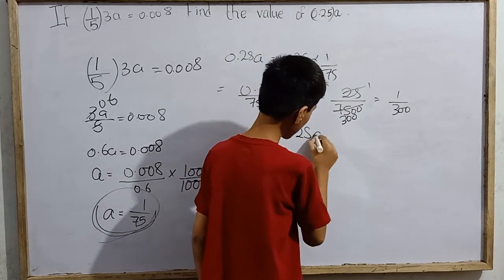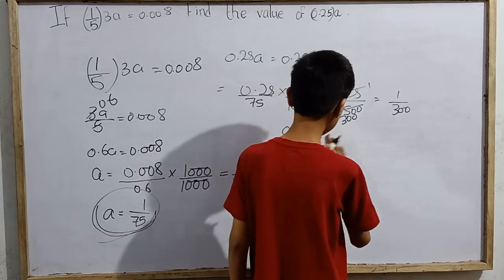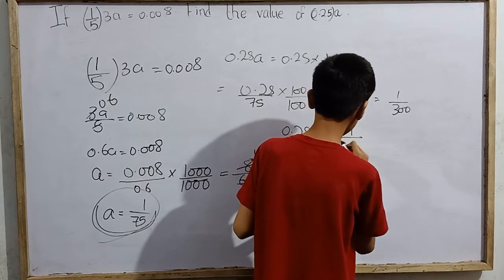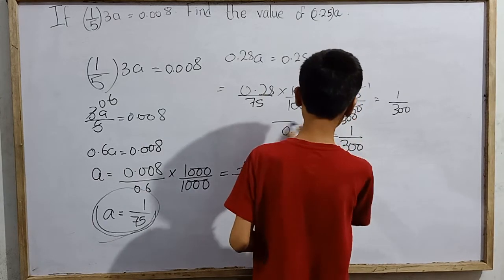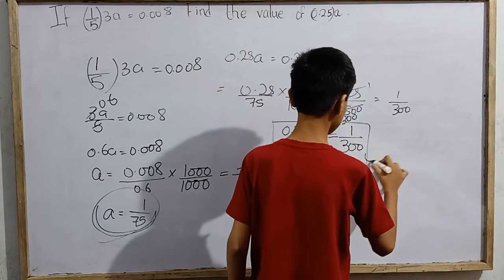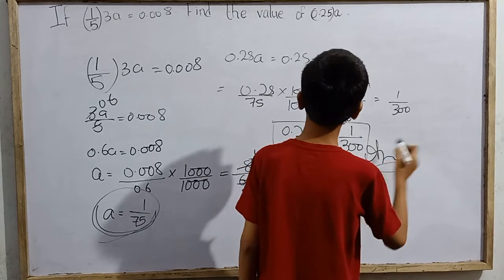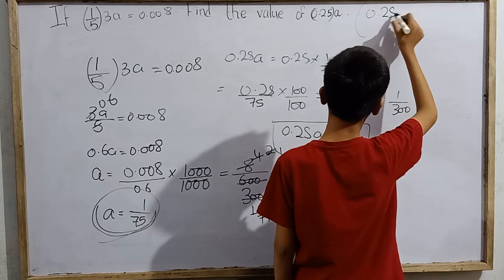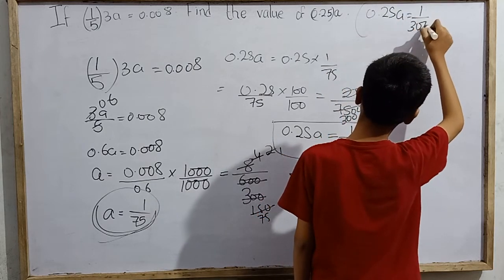Meaning that 0.25 multiplied by a, meaning a ka half of half, will be something like 1 over 300. And this is our final answer to this question. So the final answer is 0.25a equals 1 over 300.